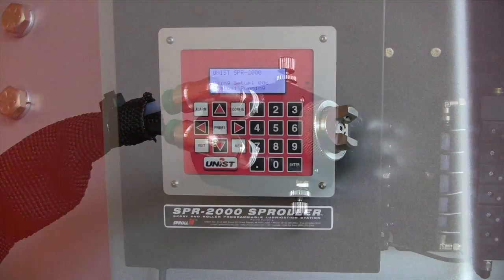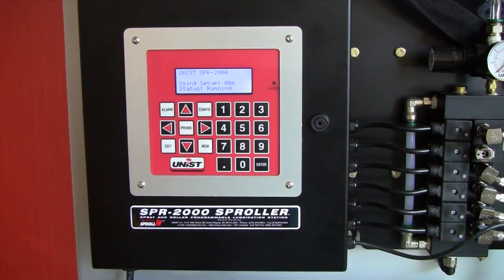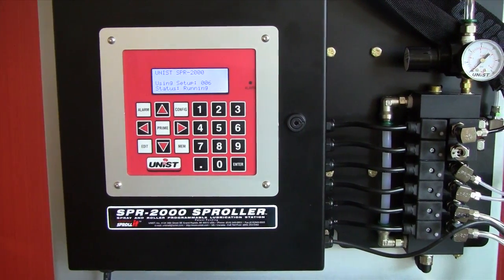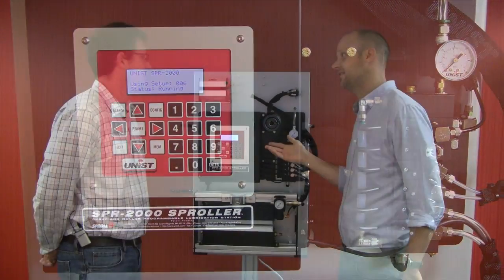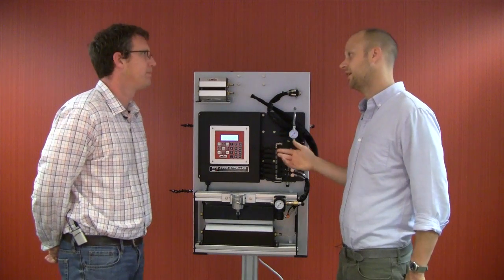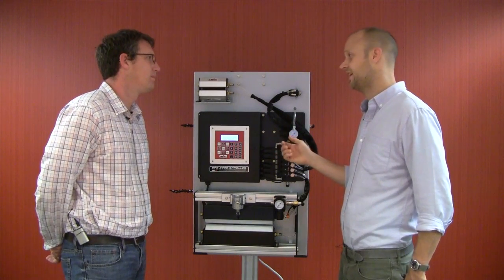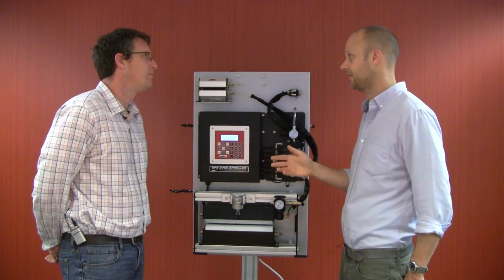What's really nice about the controller John is you can set all your jobs to memory, save them to memory, and just call them up whenever you change a die set. So it takes all the guesswork out, operators don't need to tamper with the settings. Once they're set you can kind of forget it.